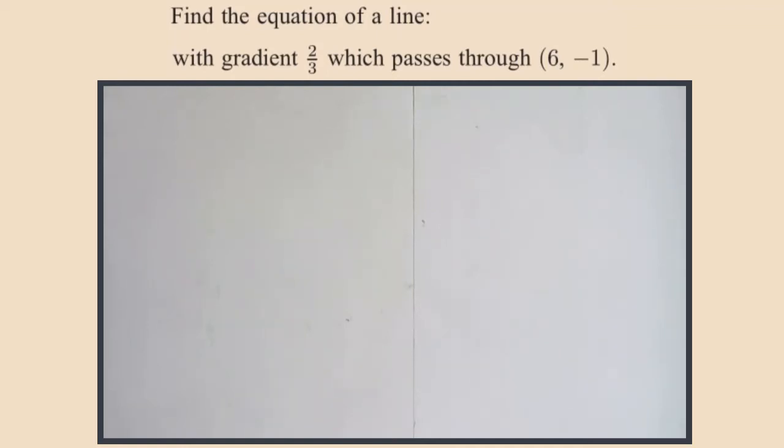Okay, find the equation of a line with gradient two-thirds which passes through (6, -1). Whenever you're looking at that, you should always look at that point. So we're given (6, -1). You should always check: is this point the y-intercept? In this case, no, because for the y-intercept the x value would be zero.